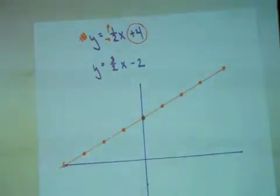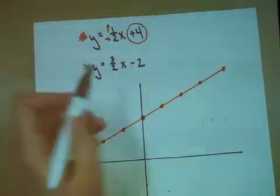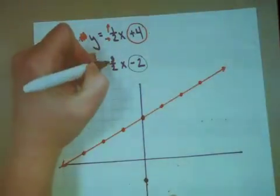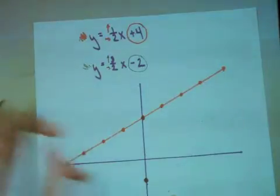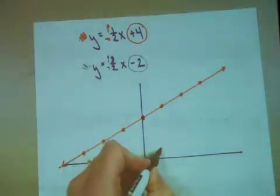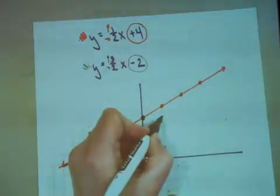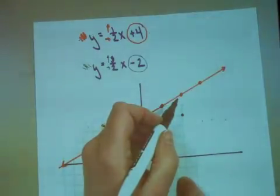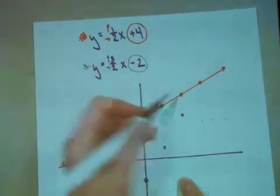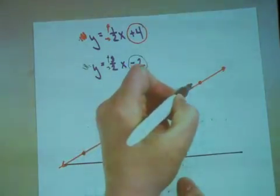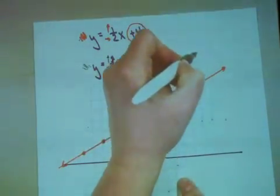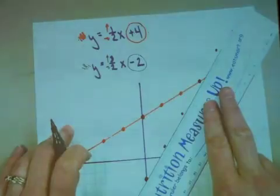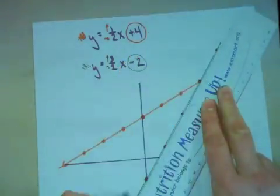Let's do our second line with green. My y-intercept is negative 2. Go down 2, plot it. My slope says I need to go up 3 and right 2. I'm going to go up 1, 2, 3 and over 1, 2. I finally found that point of intersection. Here's my nice, clean line.